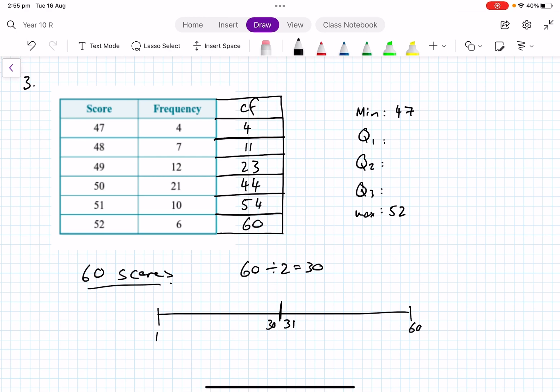Now, so first 4 scores are 47, then the next 7 up to the 11th score is 48. And then everything from the 12th to the 23rd score is 49. And then everything from the 24th score, 24, 25, 26, 27, 28, 29, 30, 31, all the way up to the 44th is 50. So that means that our median has to be 50. The Q2 is 50. Because that's the score, if I wrote it in a long list, from the 24th, 21 scores from the 24th to the 44th score would be the score of 50.